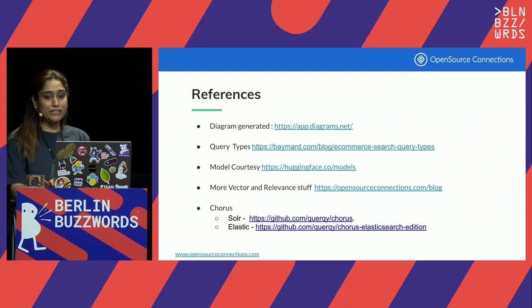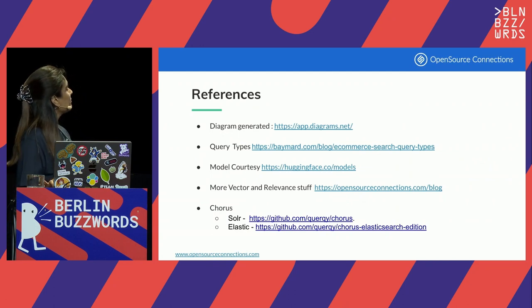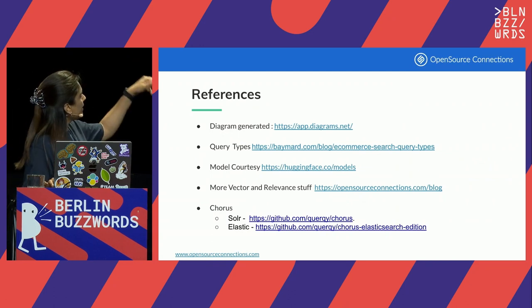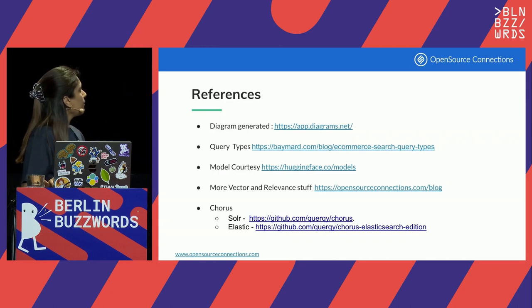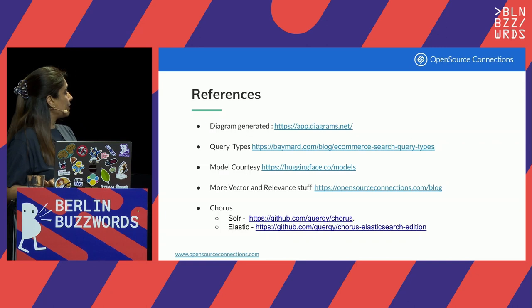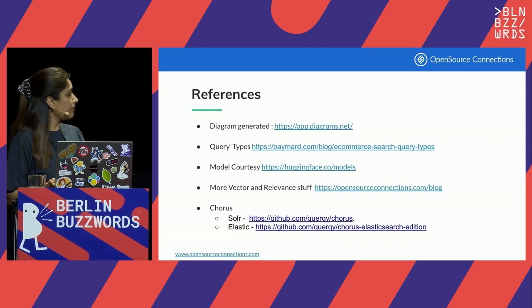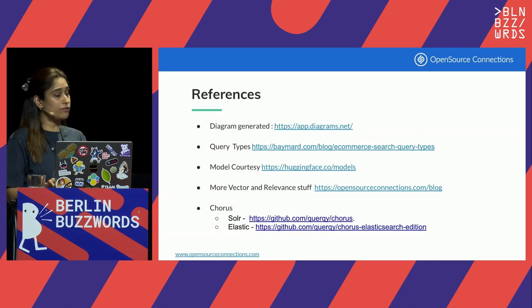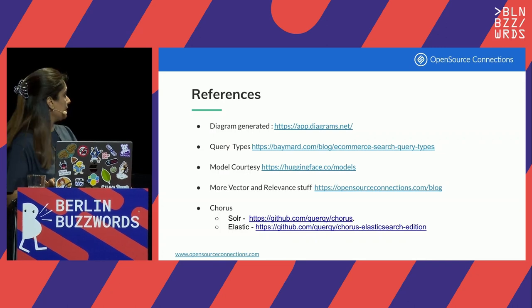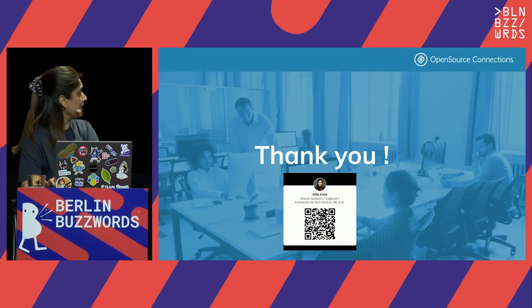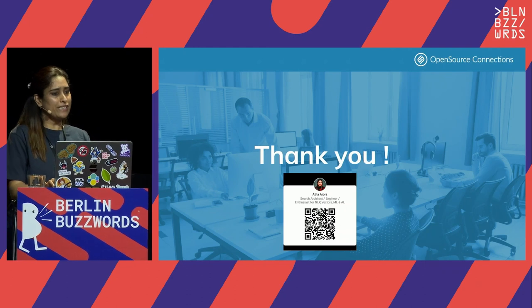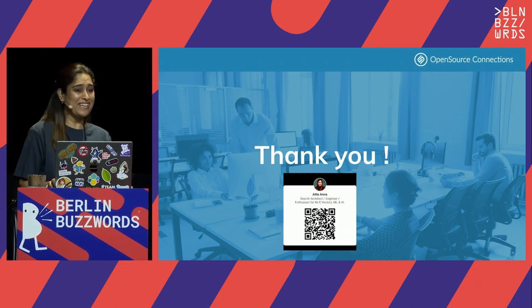Looking at the timeline that I have, these are some of the references. You can find the query types and the model choices from Hugging Face. If you want to find out more vector and relevance stuff, feel free to check out our blog at opensourceconnections.com. Also feel free to check out Chorus, which is available in the Solr and Elasticsearch engine flavor. That is my talk, and I guess we can take some questions. I hope it was not too fast.